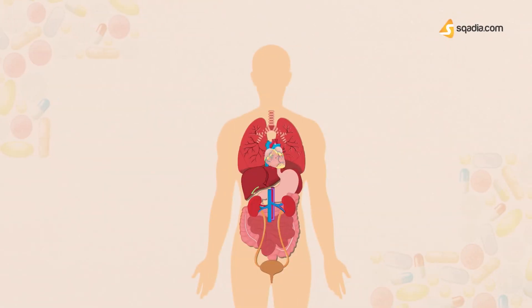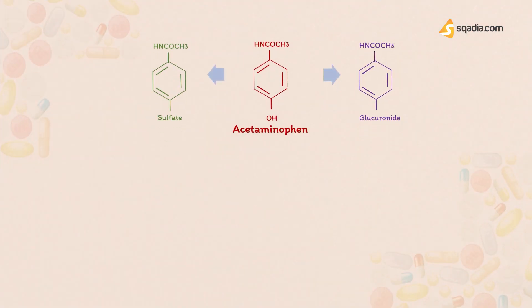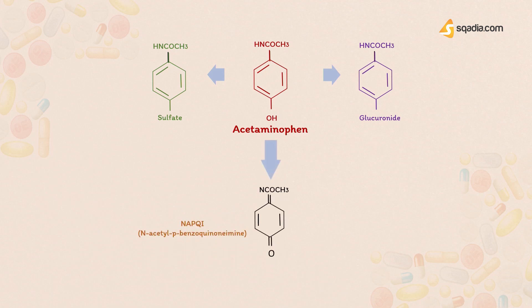Acetaminophen is administered orally and its absorption is related to the rate of gastric emptying. Peak blood concentrations are usually reached within 30 to 60 minutes. It is slightly bound to plasma proteins, so it is well distributed. A significant first-pass metabolism occurs in the luminal cells of the intestine and in hepatocytes. Under normal circumstances, acetaminophen is conjugated in the liver to form inactive glucuronidated or sulfated metabolites. A portion is hydroxylated to form N-acetyl-benzoiminoquinone, also known as N-acetyl-p-benzoquinone imine, or NAPQI — a highly reactive and potentially dangerous metabolite.